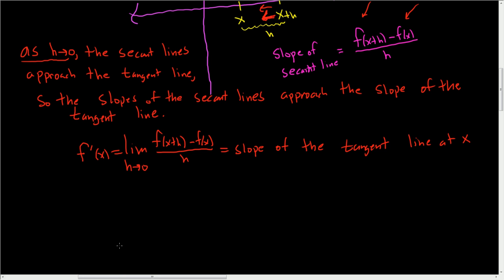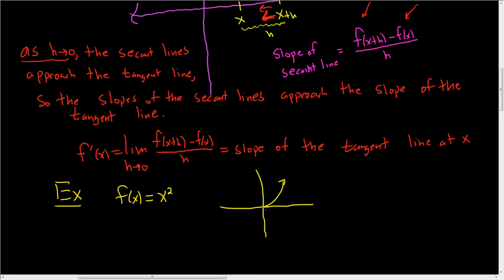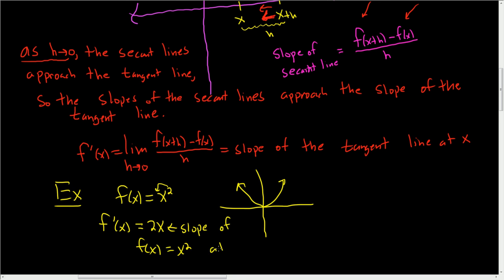Let's do a concrete example. Let's look at f of x equals x squared — this is a parabola. To find the derivative, you take the two, bring it down using the power rule, and subtract one from the exponent. So you get 2x. This is the slope of f of x equals x squared at x.